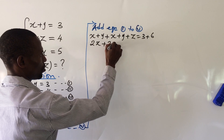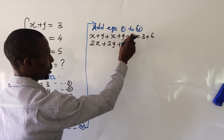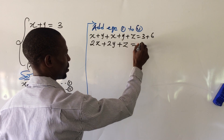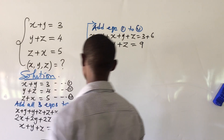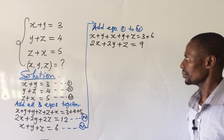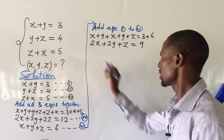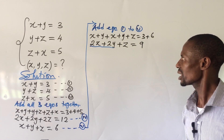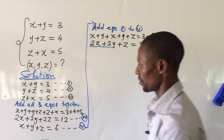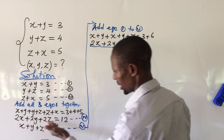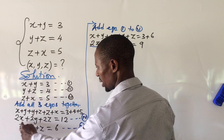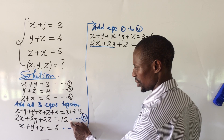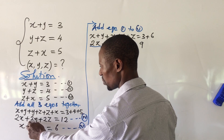So we have 2x plus 2y plus z equal to 9. Now we look at this expression — we have 2x plus 2y here. From equation 4, which says 2x plus 2y plus 2z equal to 12, if we make 2x plus 2y the subject, we get 2x plus 2y equal to 12 minus 2z.